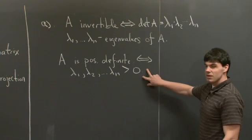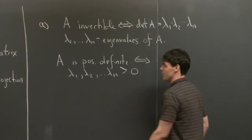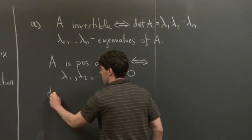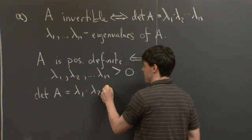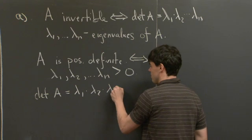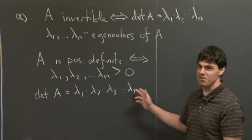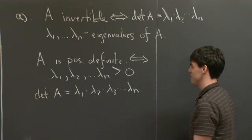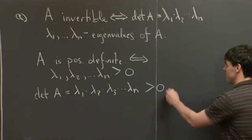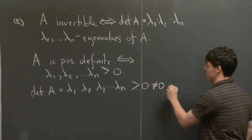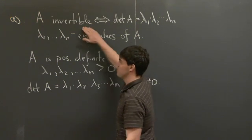So if I have a whole bunch of eigenvalues and each of them are bigger than 0, what does this say about det(A)? The product of a whole bunch of positive numbers must also be positive. If the quantity is positive, then it certainly can't equal 0. So this proves that det(A) is not equal to 0, and hence A must be invertible.